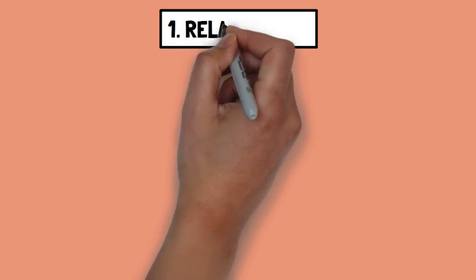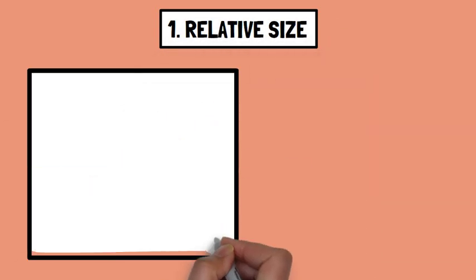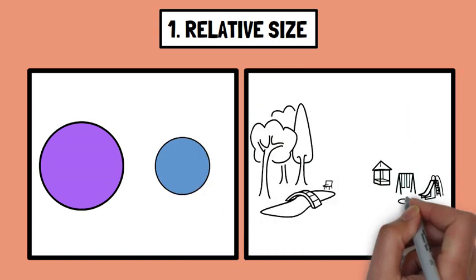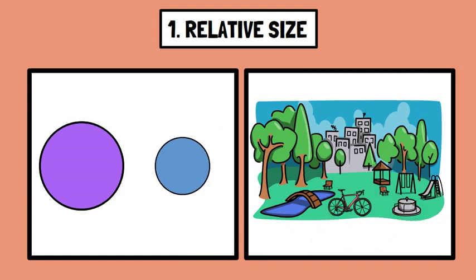Number one, relative size. When two objects are known to be similar, the one that appears smaller is perceived as farther away. For example, in a park, if two bicycles are of the same size but one appears smaller, you interpret the smaller bicycle as being farther away.